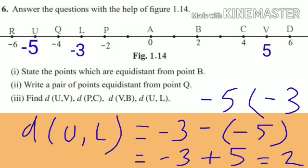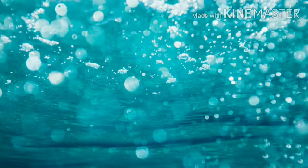Next, distance between point U and L. The coordinate of point U is −5 and the coordinate of point L is −3. Here −3 is greater than −5, so the distance is the greater coordinate minus the smaller coordinate: −3 − (−5) = −3 + 5 = 2. So the distance between point U and L is 2 units.